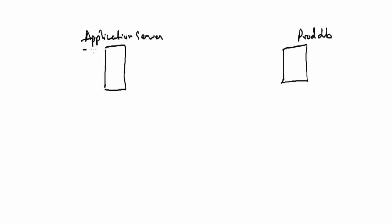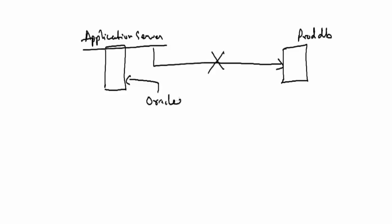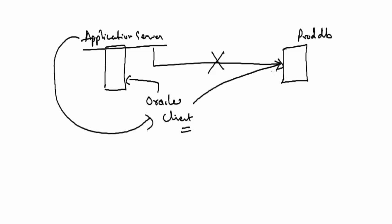When your application wants to connect to the database, it cannot directly connect to the database, because you need to install something called Oracle client on the application server. With the help of Oracle client, the application will connect to Oracle client, Oracle client connects to the database server, and then the queries are executed on the database server. This is how things work in real time.